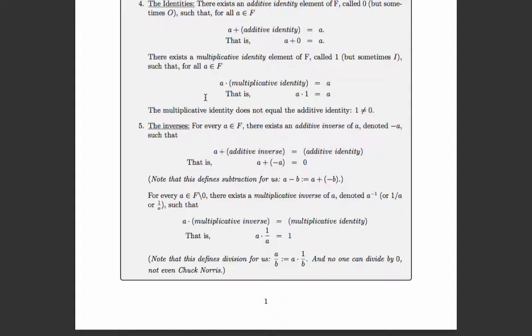Now the multiplicative inverse, or reciprocal: for every element in F that is not zero there is a multiplicative inverse, typically denoted a to the negative one or one over a. It has the property that a times its multiplicative inverse equals the multiplicative identity — in other words, a times its reciprocal is one. We now have a definition of division: a divided by b means a times the multiplicative inverse of b, which is only defined if b is non-zero, because you can't divide by zero.